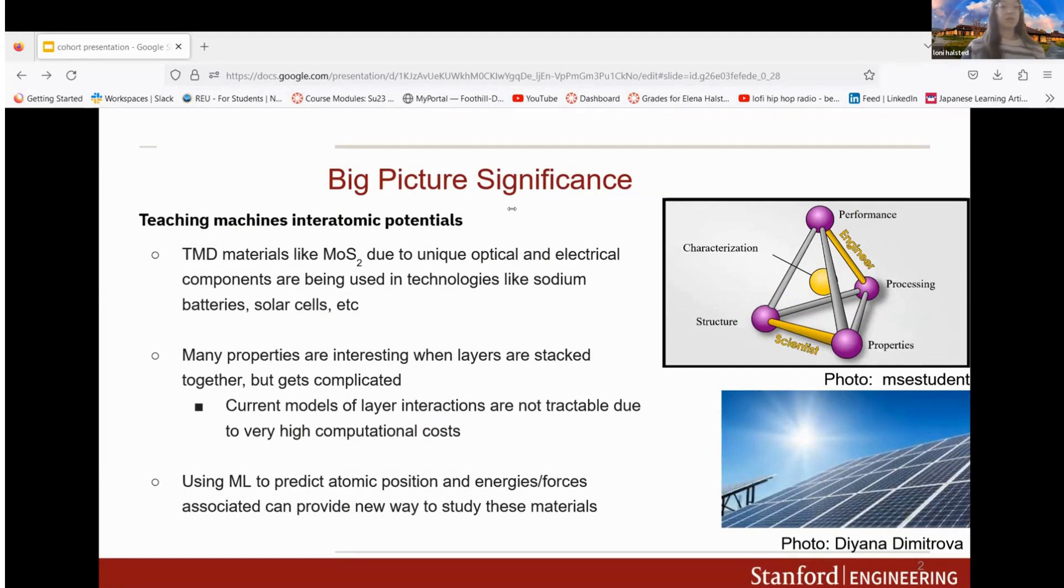Many of these properties are interesting when layers are stacked together, however understanding these structures becomes more complicated. The current models of layer interactions are not tractable because of their very high computational cost. A new way to study these materials would be to use machine learning to predict the atomic position and the energies and forces associated with it.